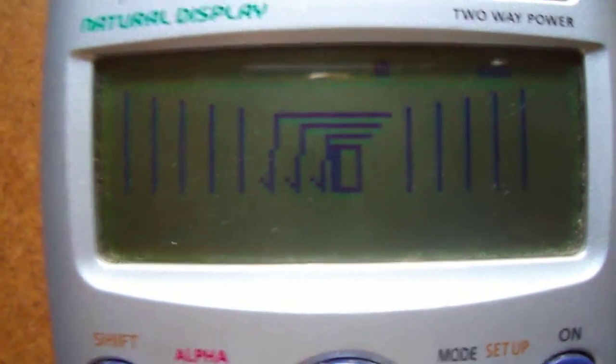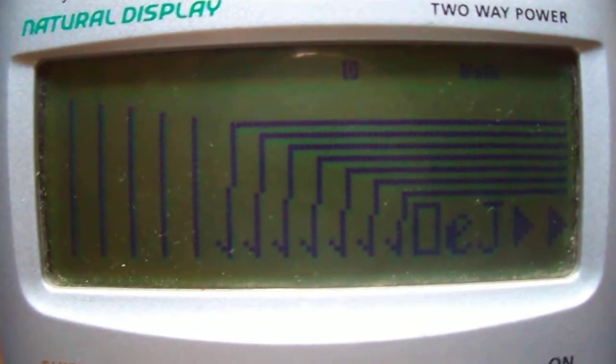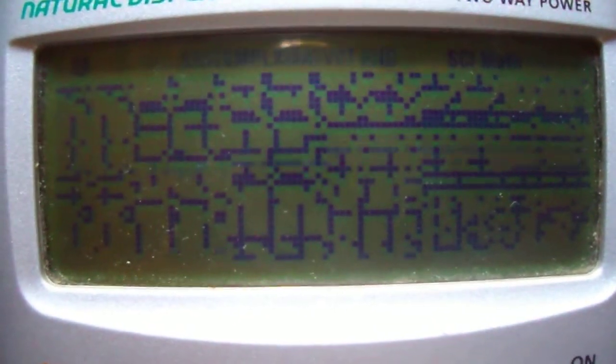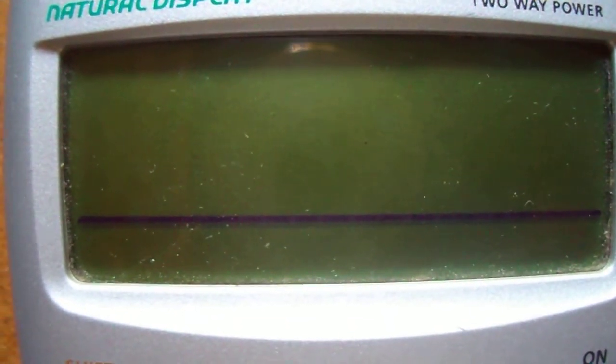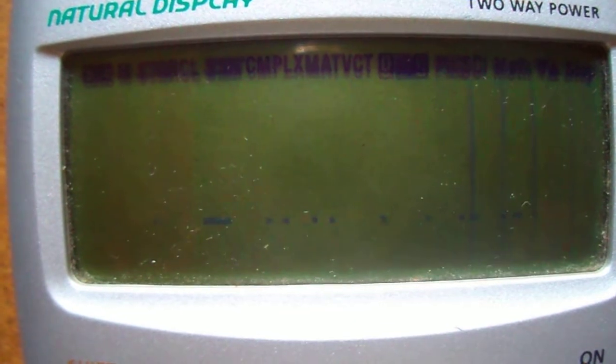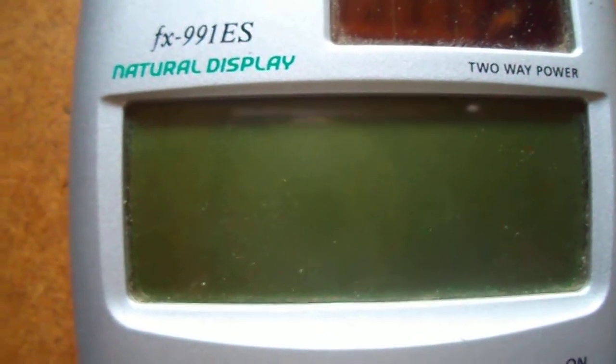Keep pressing the square root button until this hack occurs. Oh no, your Casio is dead. This was a trick. Now tell this to your friends and enjoy.